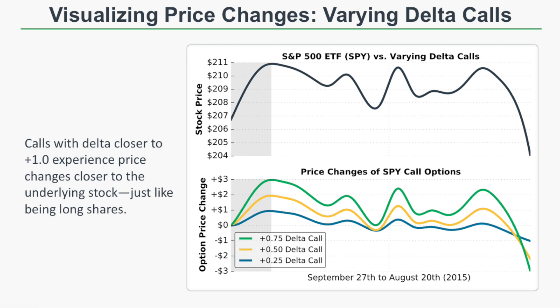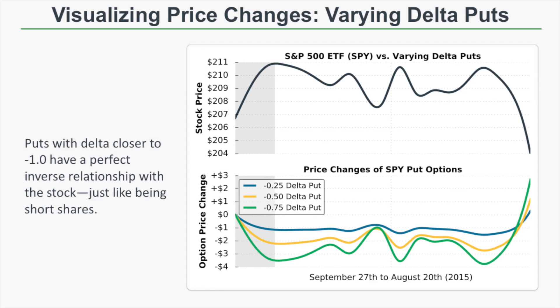A call option with a Delta of plus 1 means the option's price is expected to increase by $1 for each $1 increase in the stock price. If you own 100 shares of stock, a $1 increase results in a P&L of +$100. If you own one call option that increases by $1, the profit is also +$100 — just like owning 100 shares. So the closer a call's Delta is to plus 1, the closer that call option is to being a long-share equivalent.